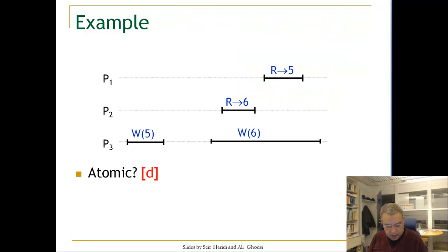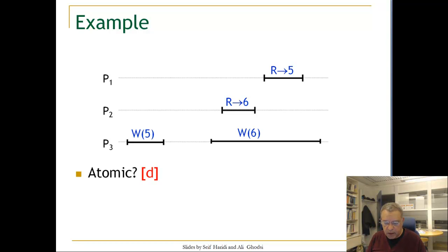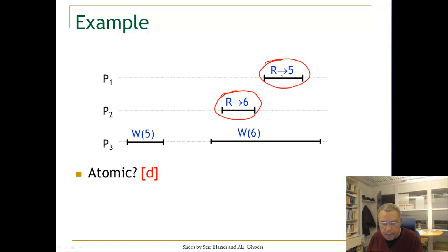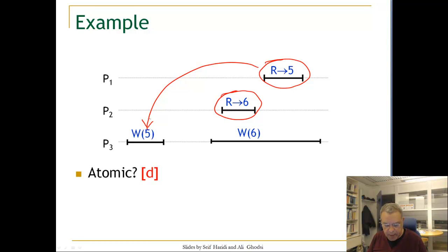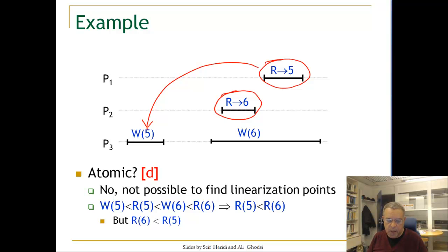Let's look at an example and see if this execution is atomic or not. This is actually a regular register execution, and this execution is not atomic. You can see that this read happens after another read, but it is reading a previously written value, while the later read reads a more recent value. This does not satisfy linearizability. One way of stating it is that it is not possible to find a linearizable total order of all operations.